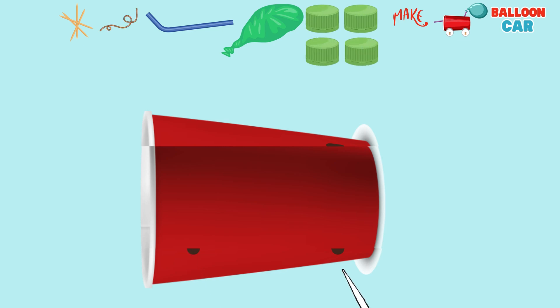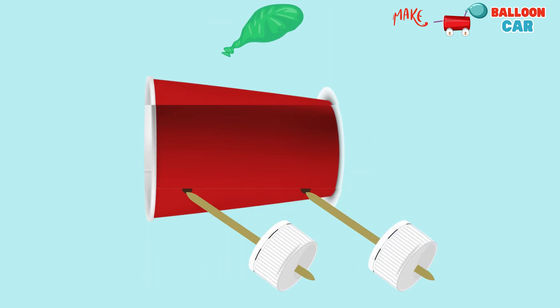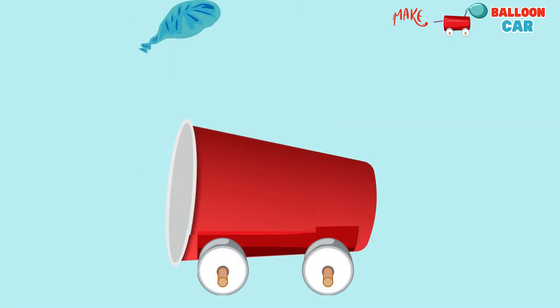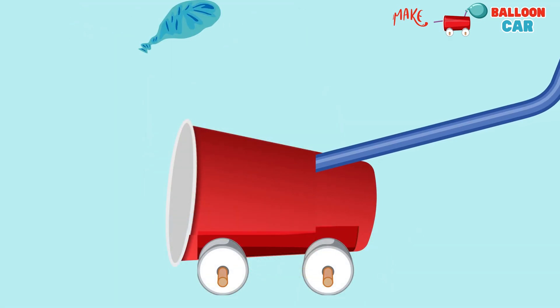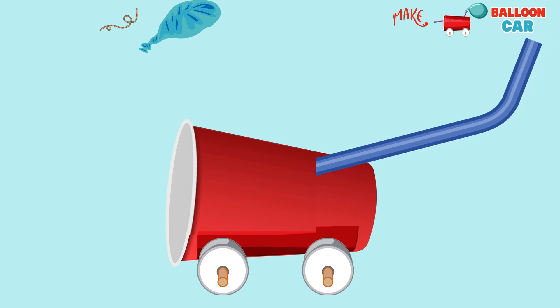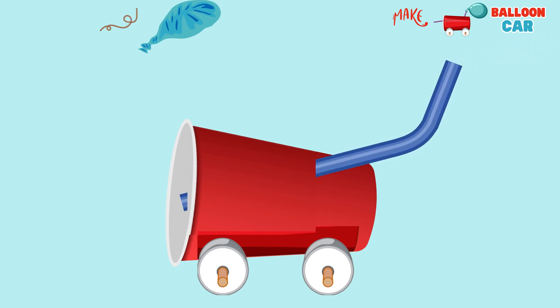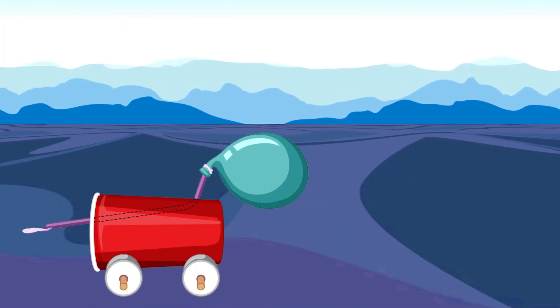Place four sticks under the base of the cardboard cup. Attach two bottle caps as front wheels, and the other two as rear wheels. Create a steering mechanism by attaching the straw to the top of the cup. Inflate the balloon, twist the neck, and tie it with a string. Place the car on a flat surface and release the balloon's mouth. Watch it go!